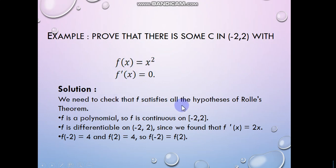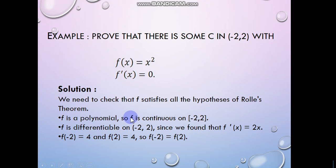First we have to check that the function is continuous and differentiable. It is clear that f(x) equals x squared is a polynomial, and polynomials are always continuous. No one has to check — any polynomial is 100% continuous. So it is continuous on the interval minus two to two.